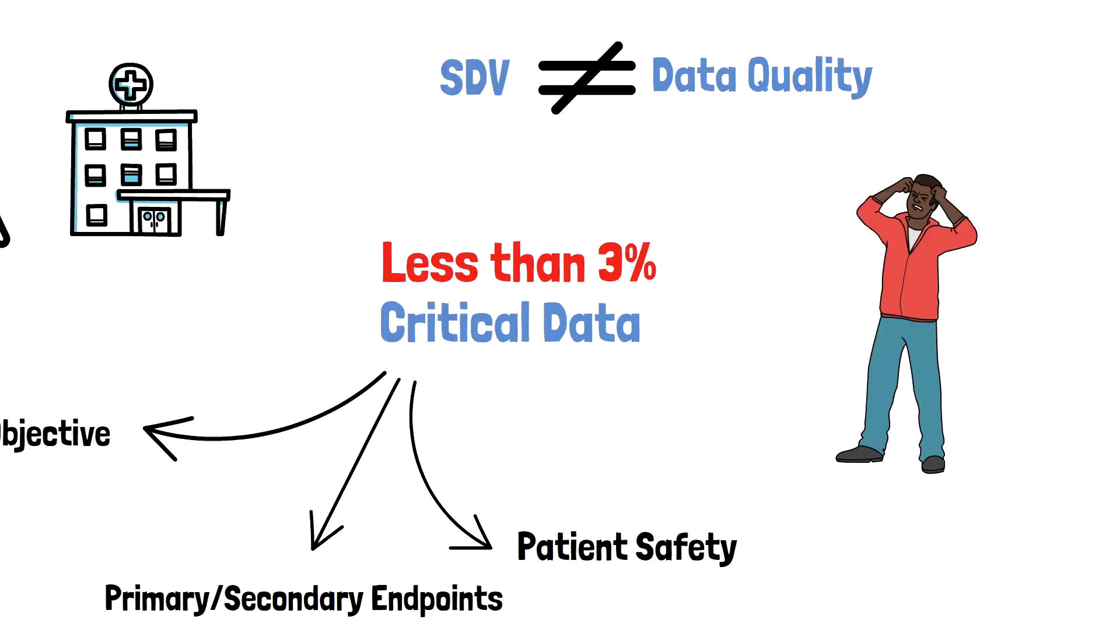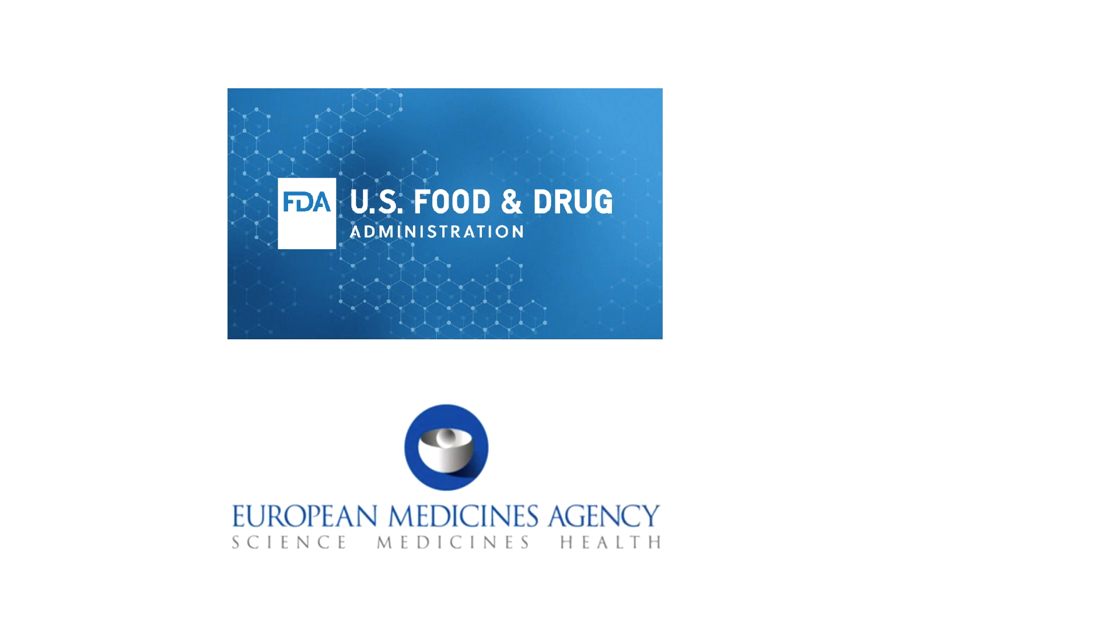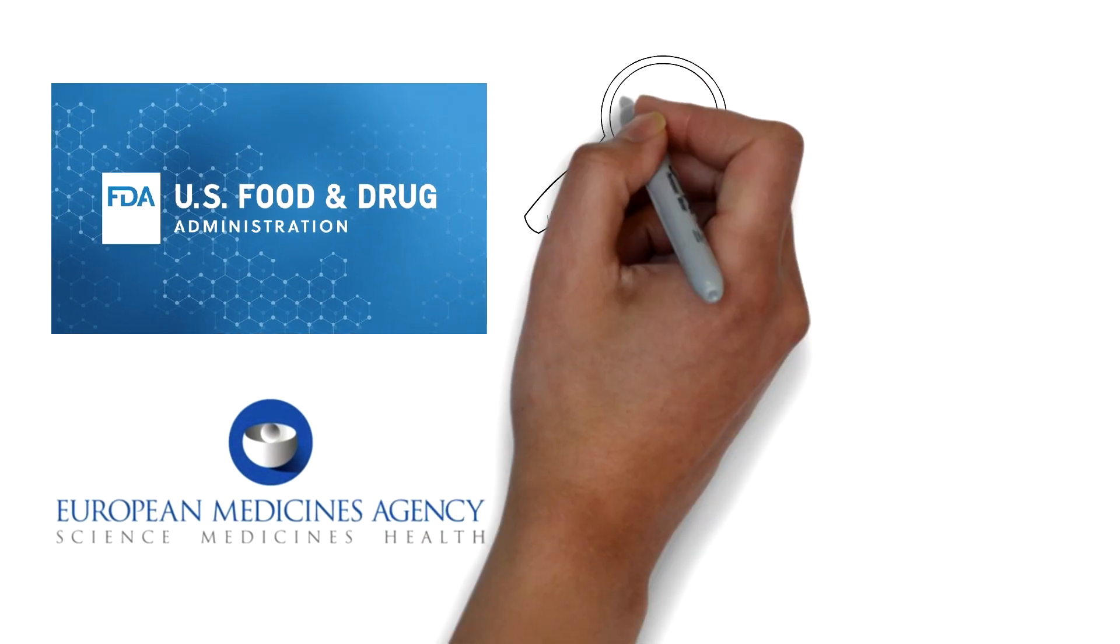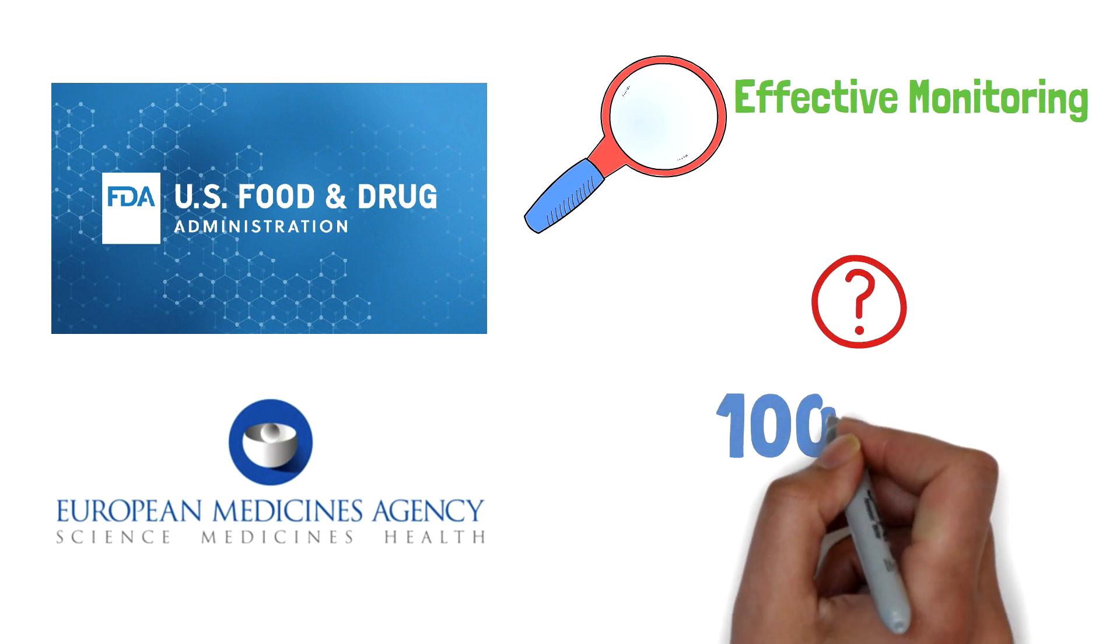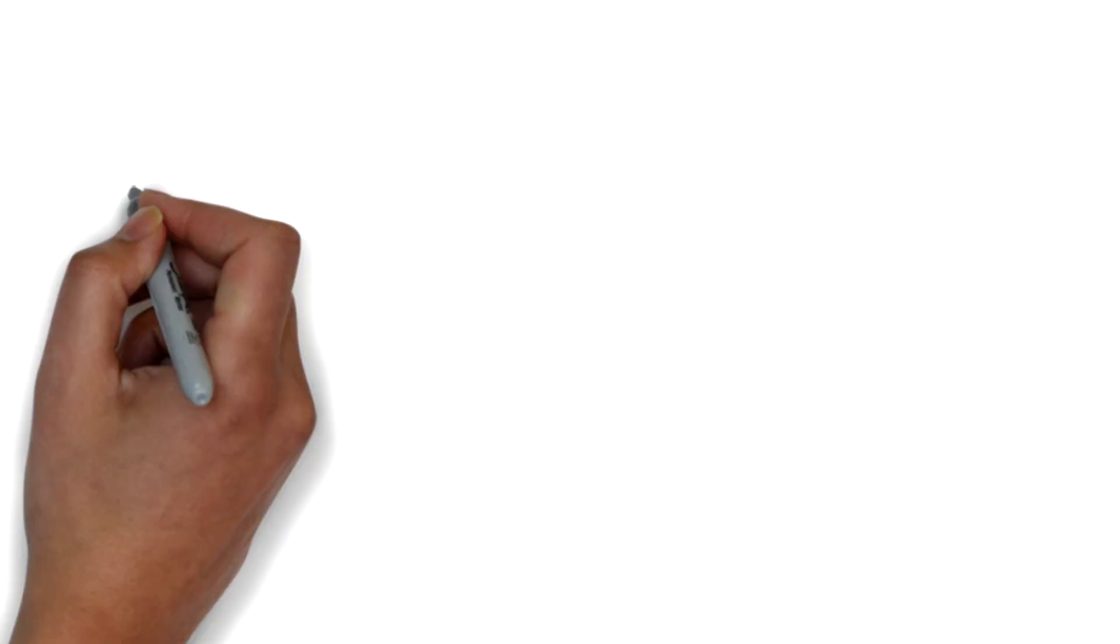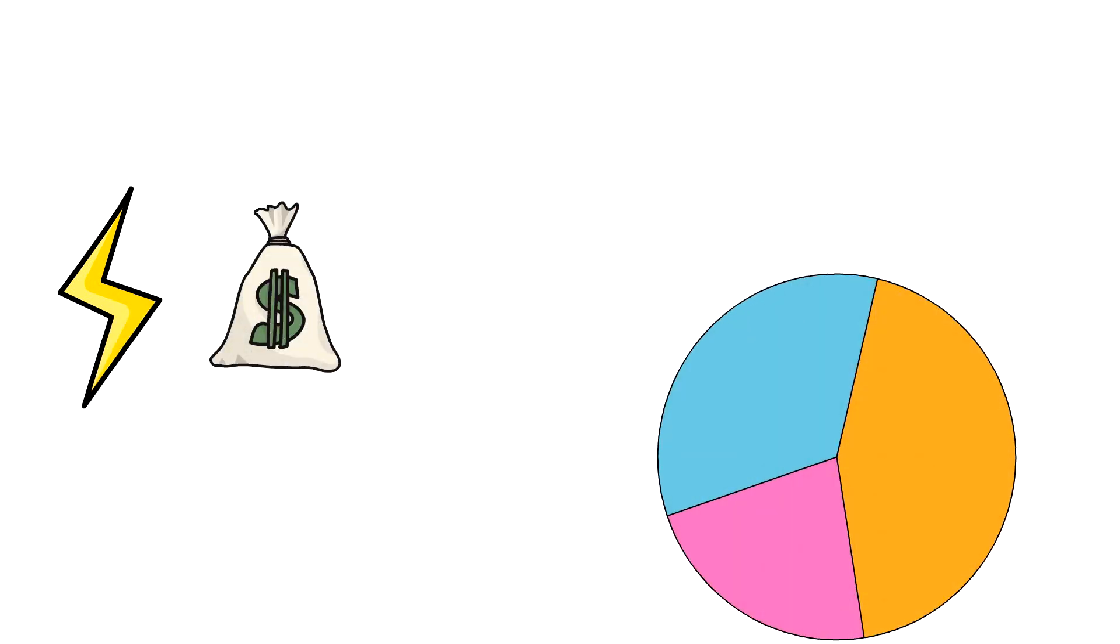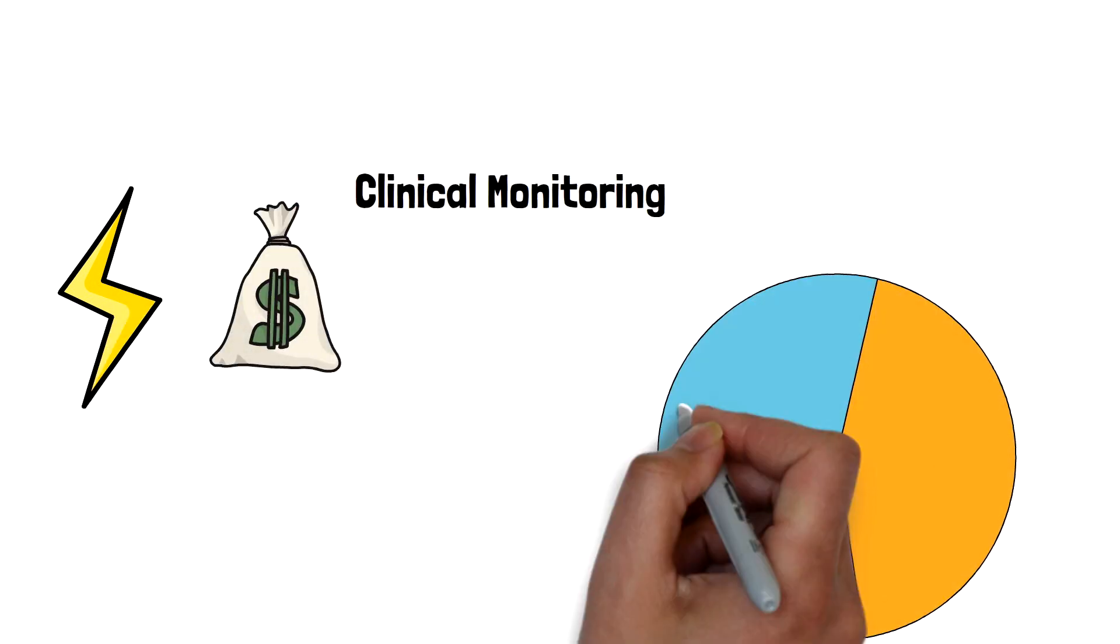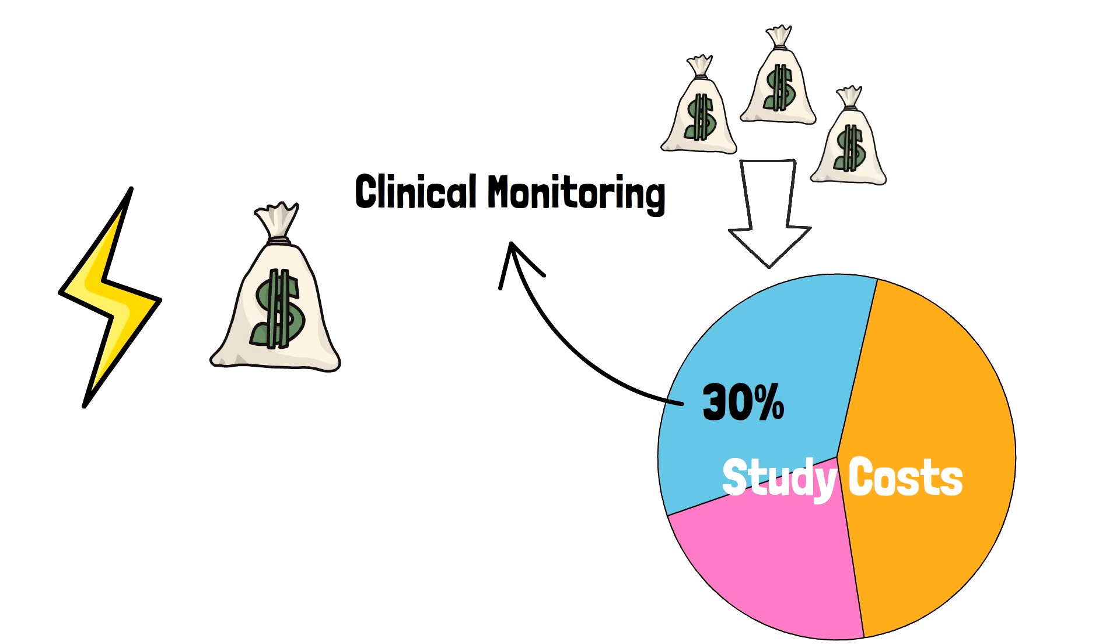What they also didn't understand was even after the FDA and EMA had given a go-ahead on exploring more effective monitoring methods, the industry is still focused on near or 100 percent source data verification. This not only consumed excessive energy but also study costs. Clinical monitoring costs approximately 30 percent of the entire clinical trial costs, meaning hundreds of thousands or even millions of US dollars are easily spent on clinical monitoring.